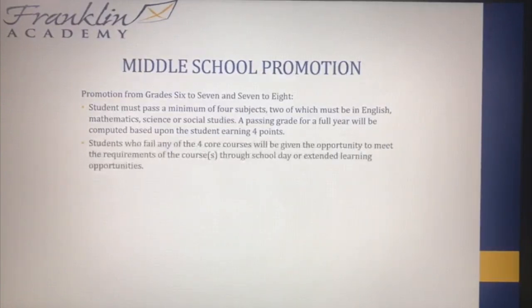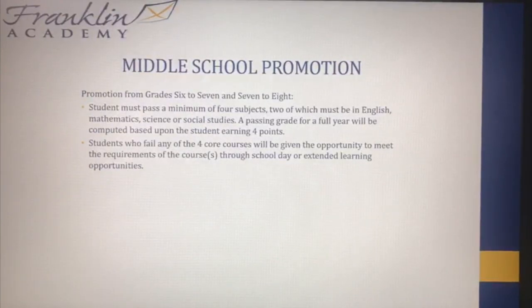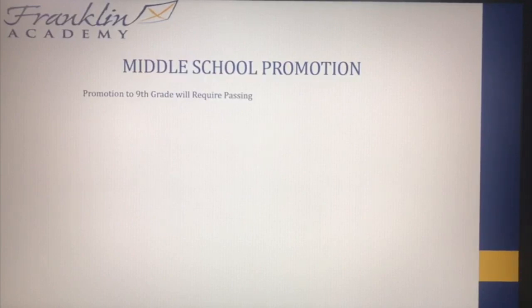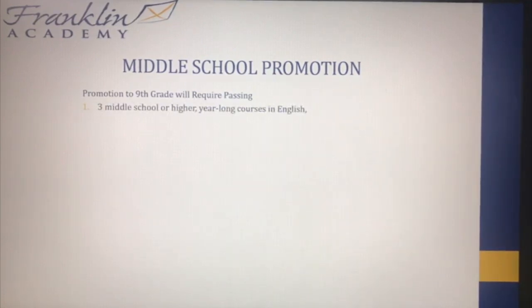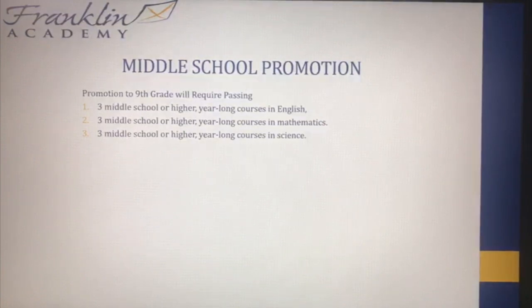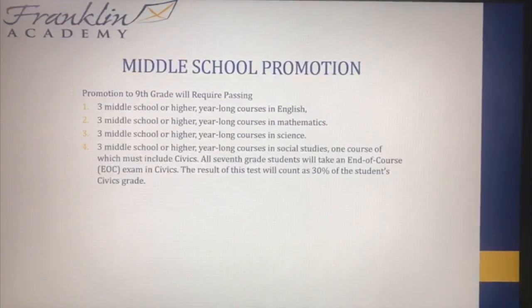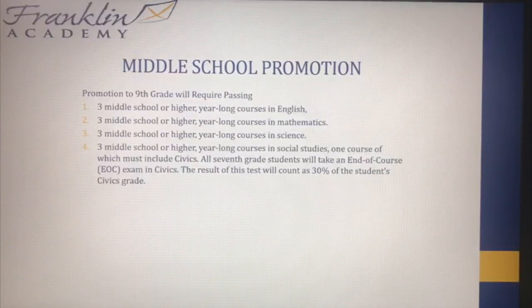A passing grade for a full-year course will be computed based upon the student earning four points — I'll give some examples later. Students who fail any of the four core courses will be given the opportunity to meet the requirements through school-day or extended learning opportunities. In order to be promoted to ninth grade — meaning graduating middle school — students need three middle school or higher year-long courses in English, three in Math, three in Science, and three in Social Studies. For Social Studies, it is mandatory that students take a civics class, and that civics class has an EOC — an end-of-year exam — that will count as 30% of the student's civics grade.